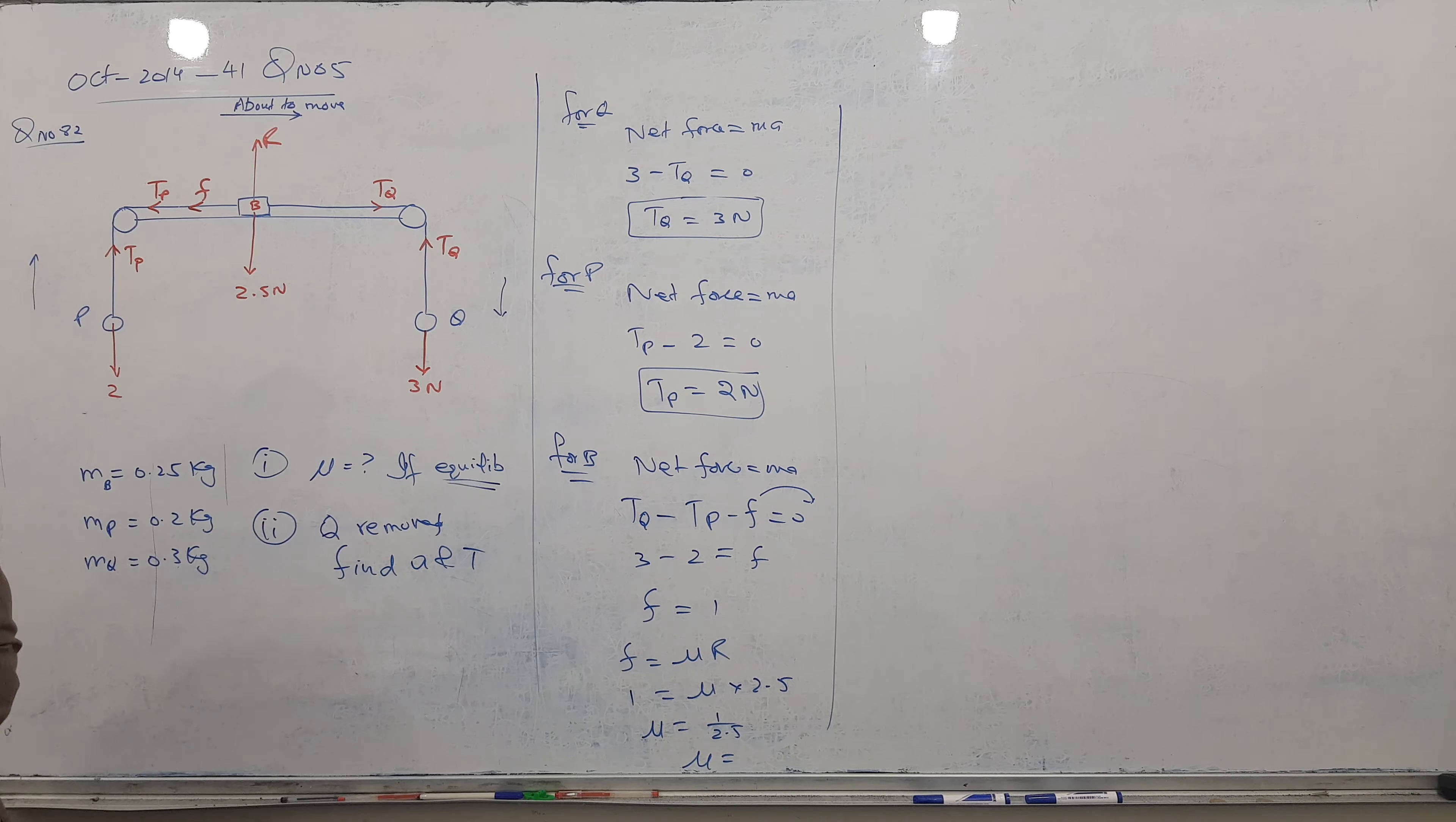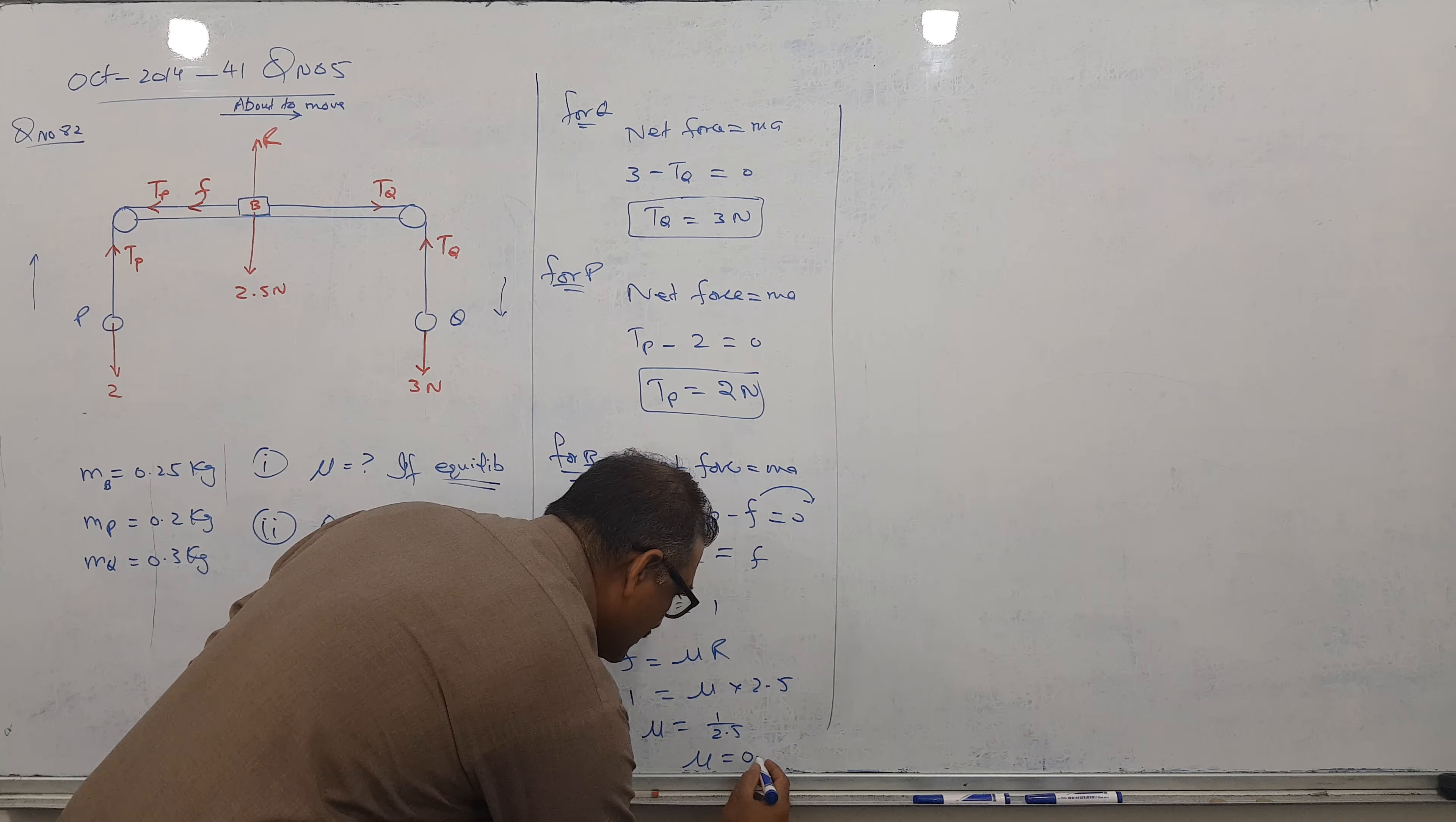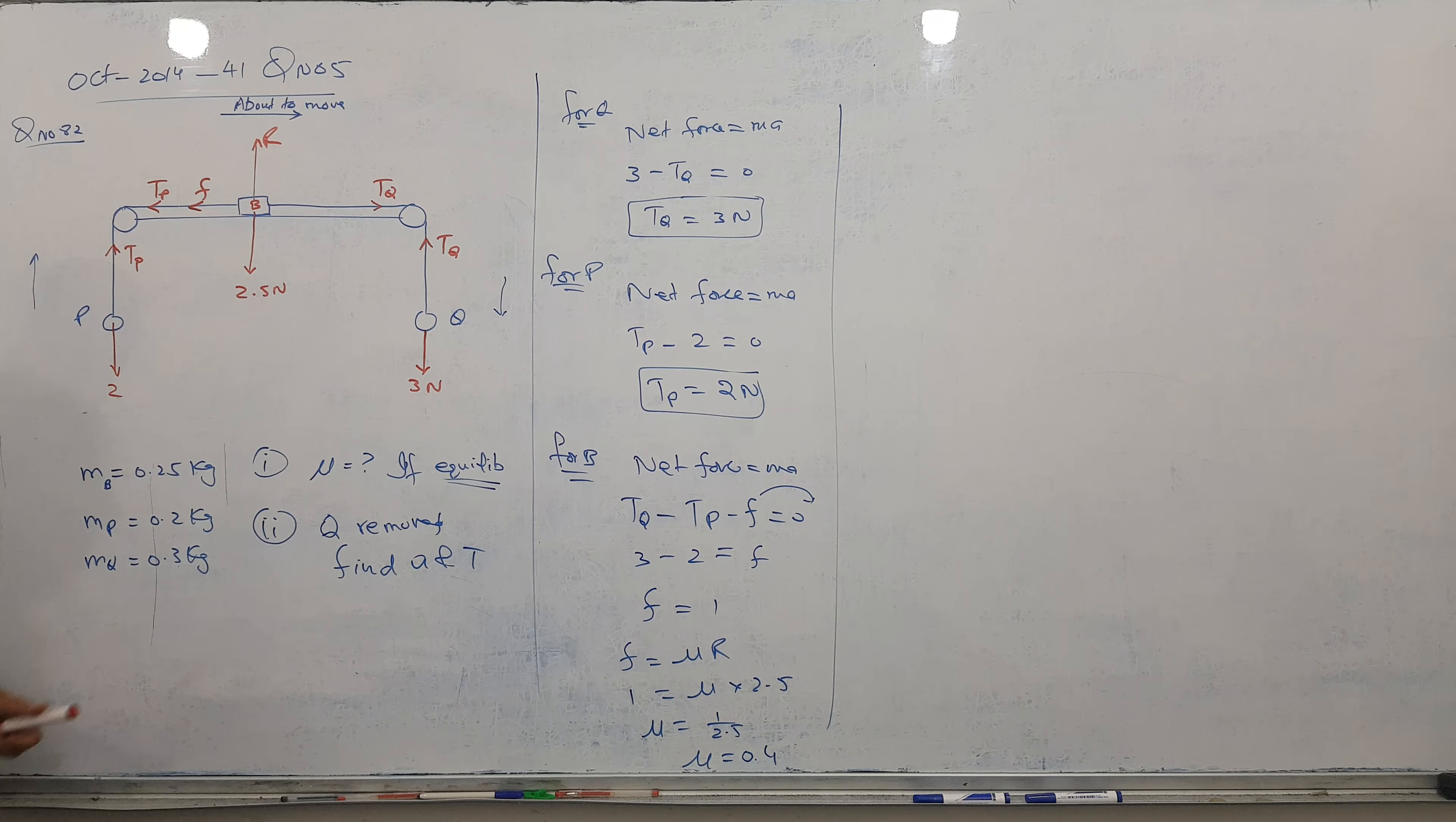So 1 divided by 2.5, it gives you 0.4, correct? So 0.4 is Mu. So first part is very clear. So let's talk about other one.